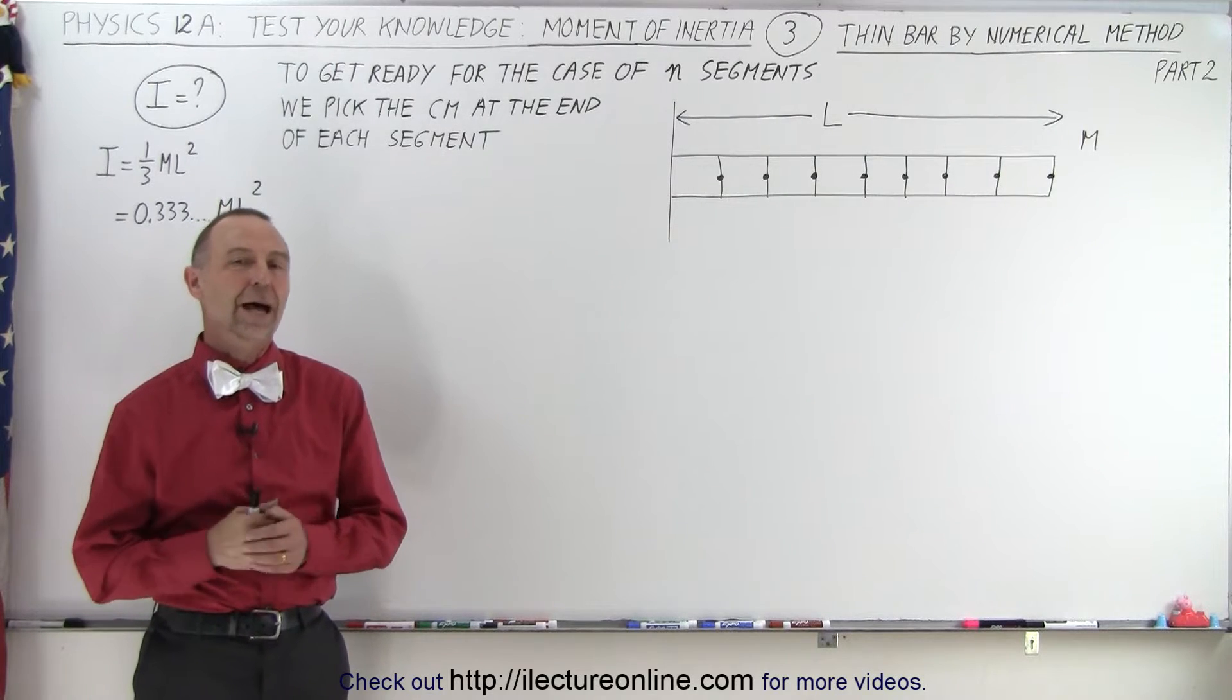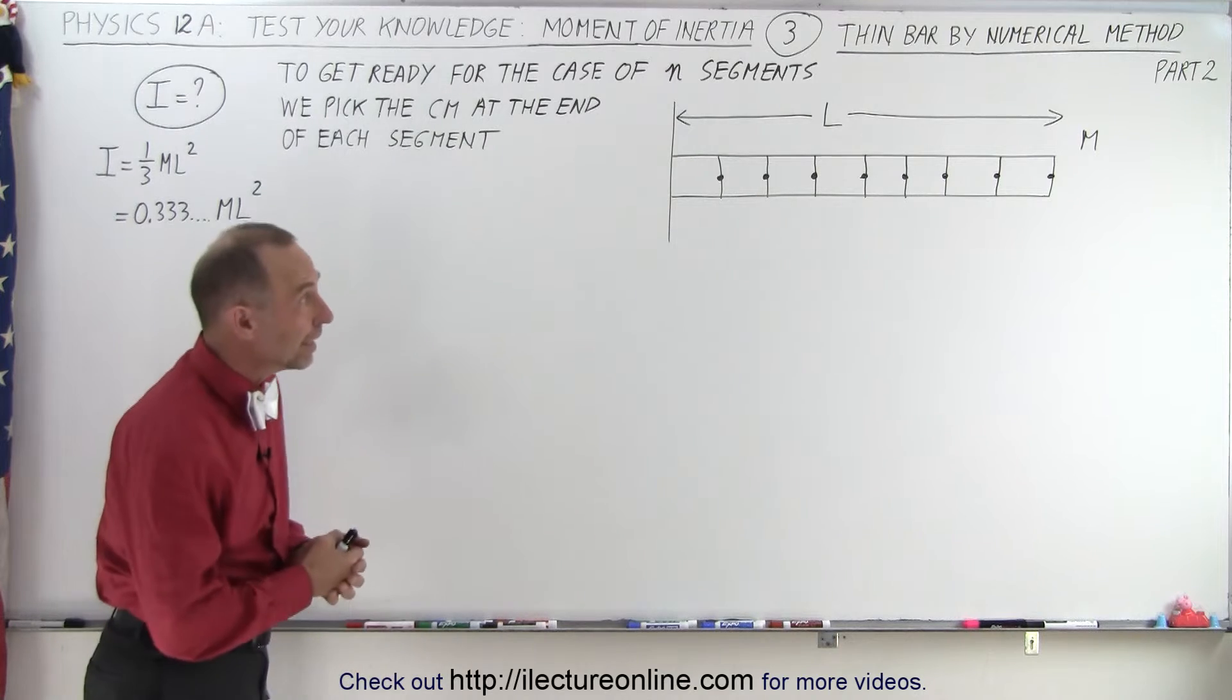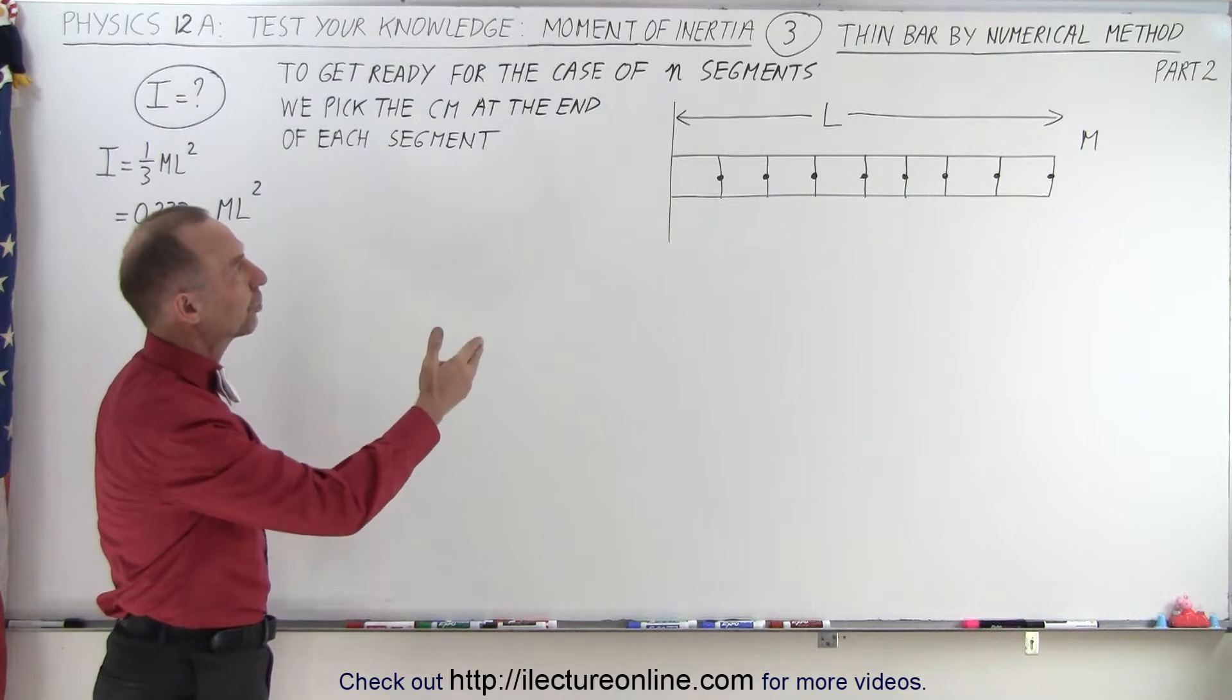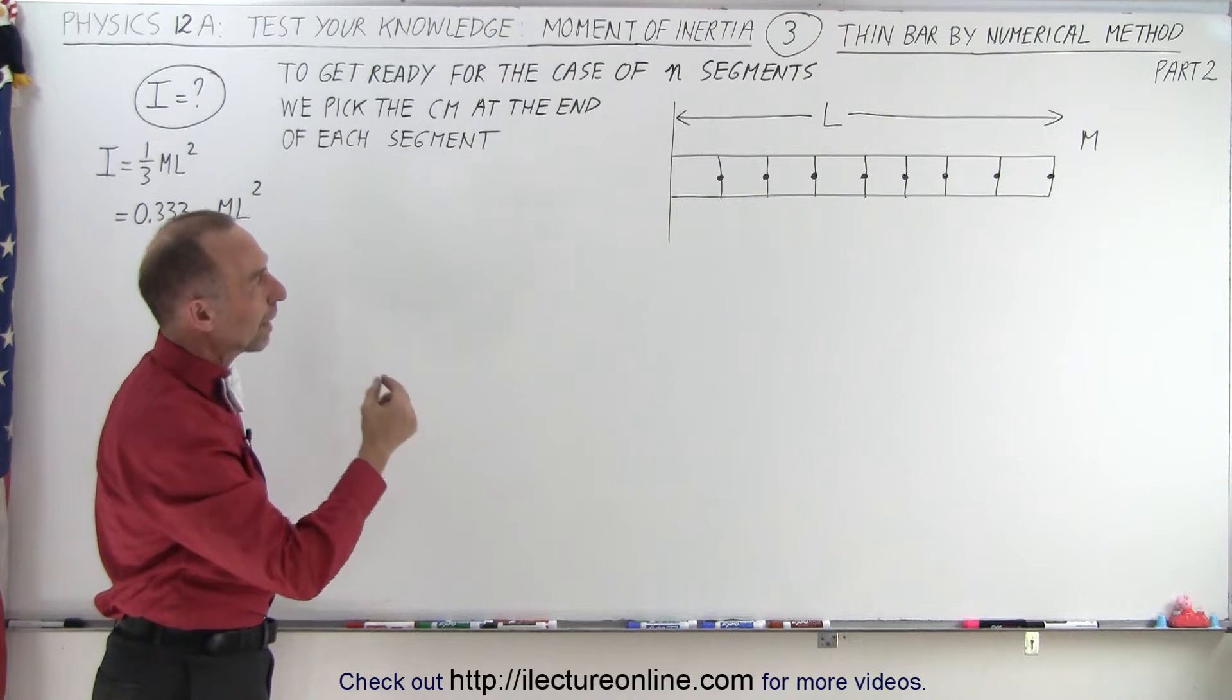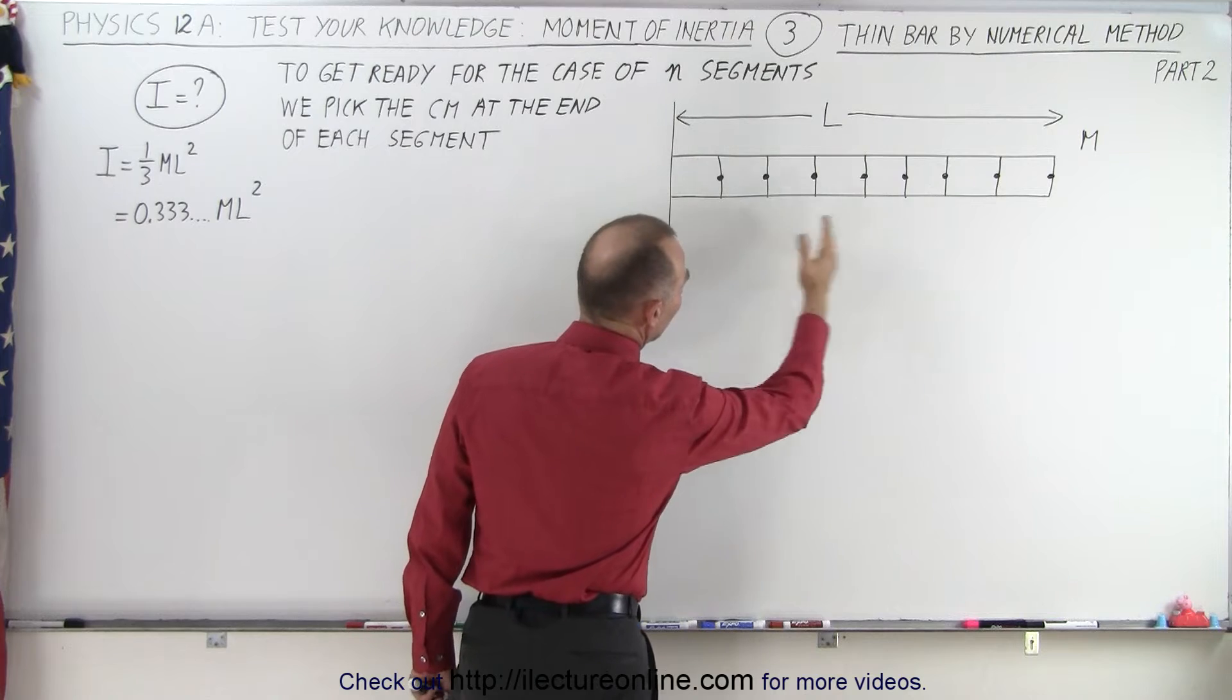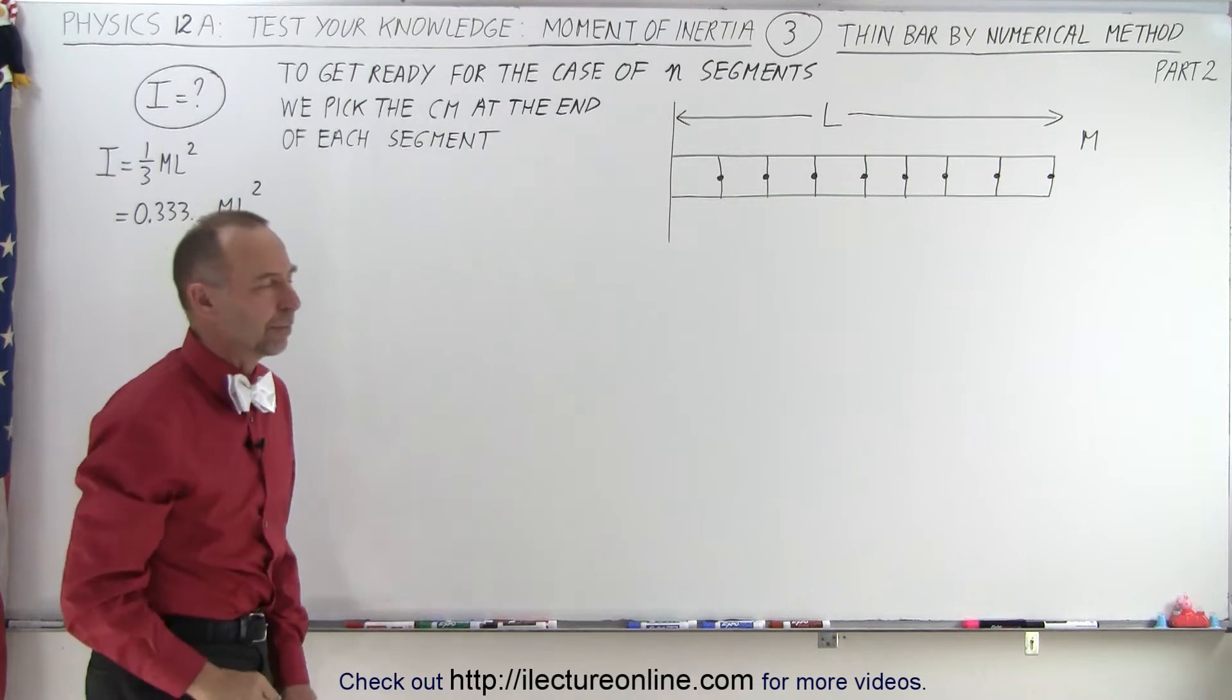Welcome to our lecture online. Now we're going to get ready to do it for n segments as n goes to infinity. In order to make that easier to work, we're going to find a moment of inertia using numerical methods by assuming now that the center of mass of each segment—so now we have 8 segments—is at the end of the segment instead of at the middle of the segment.